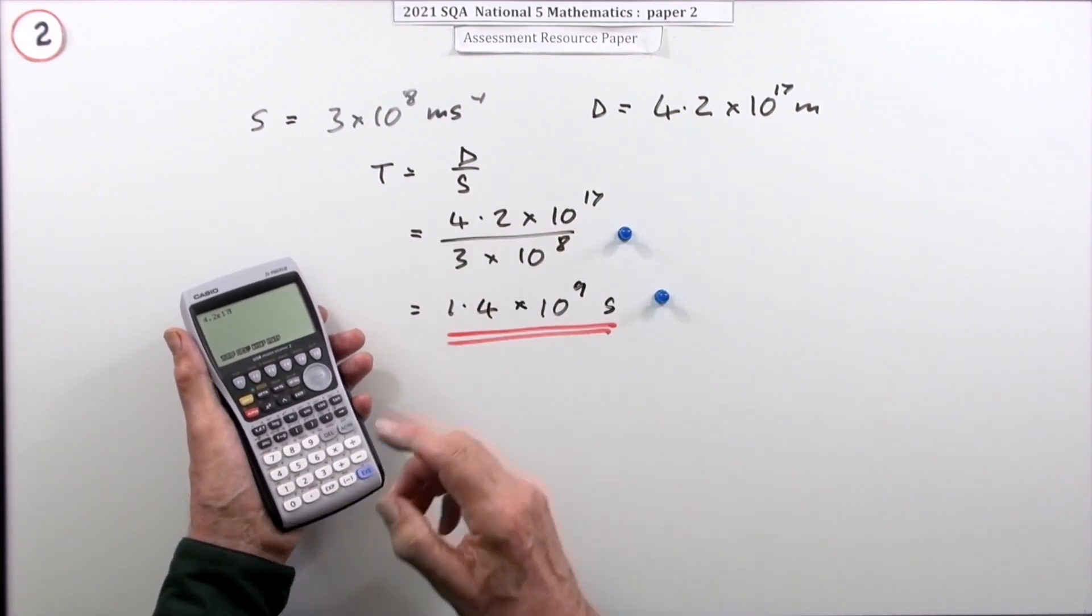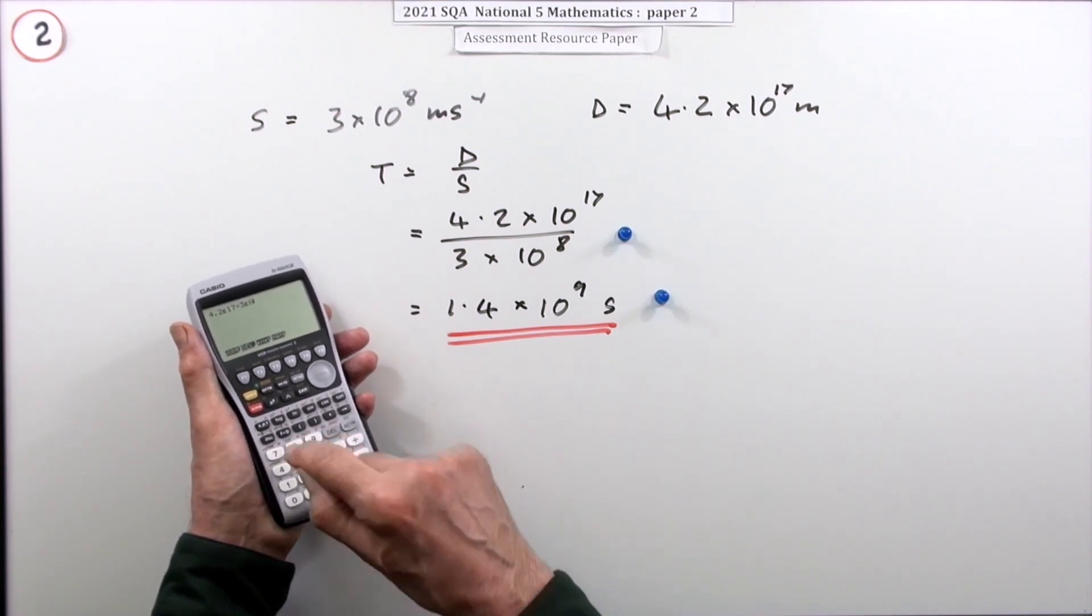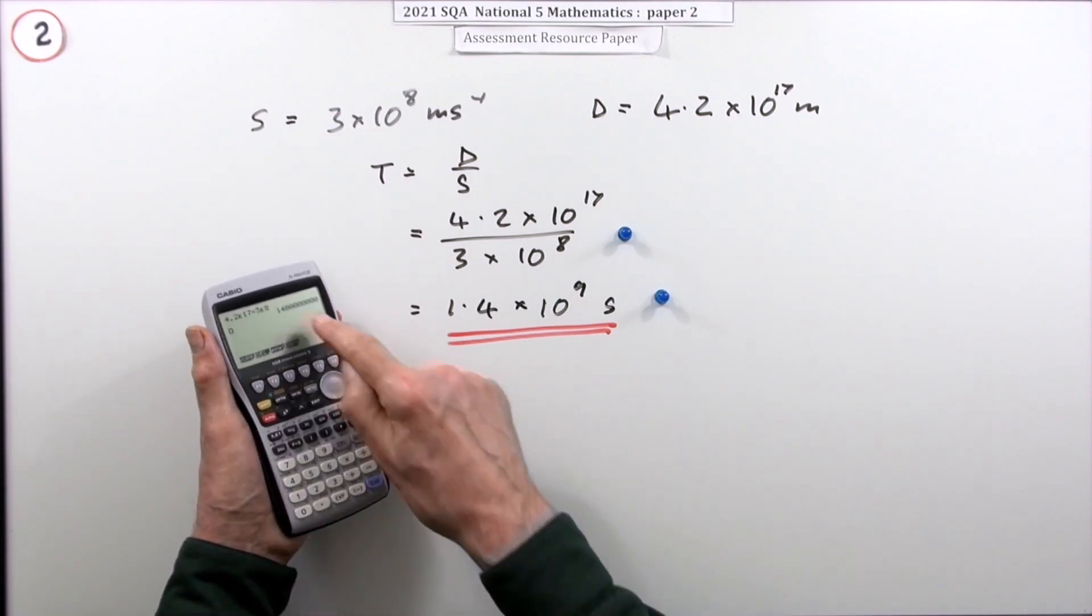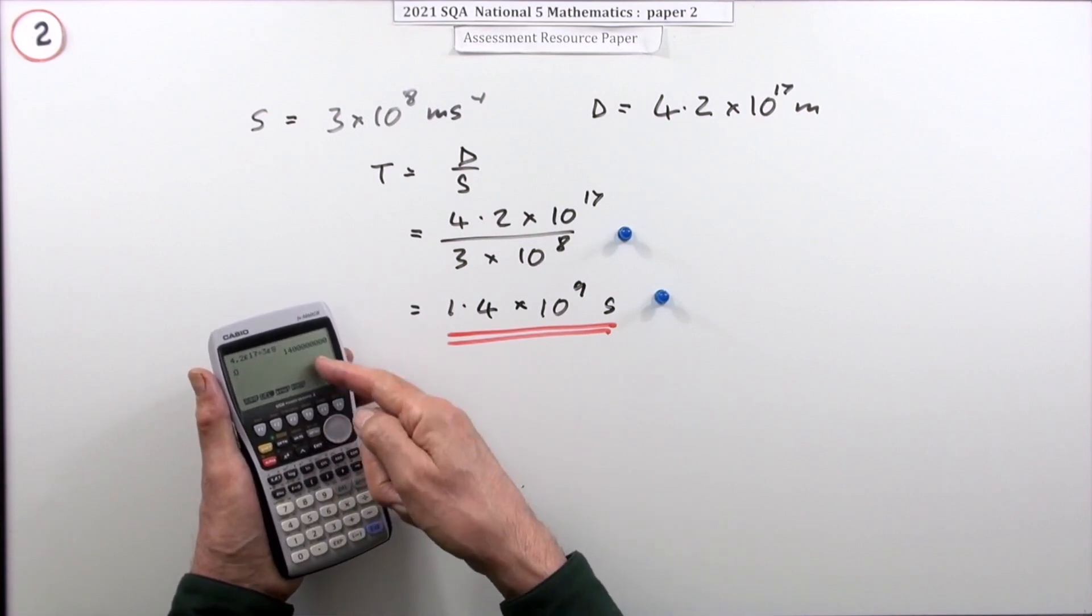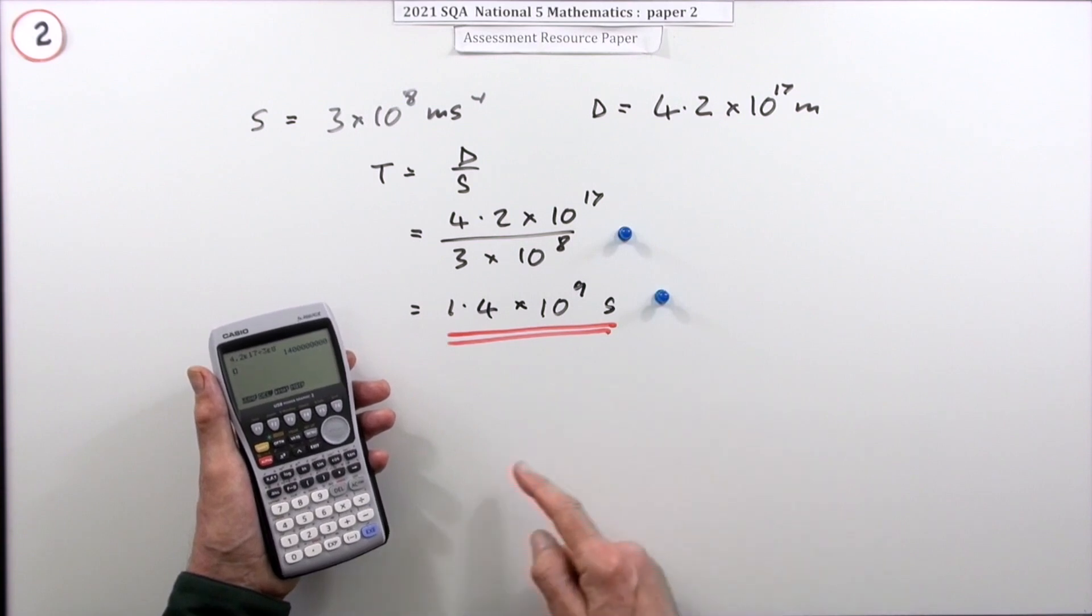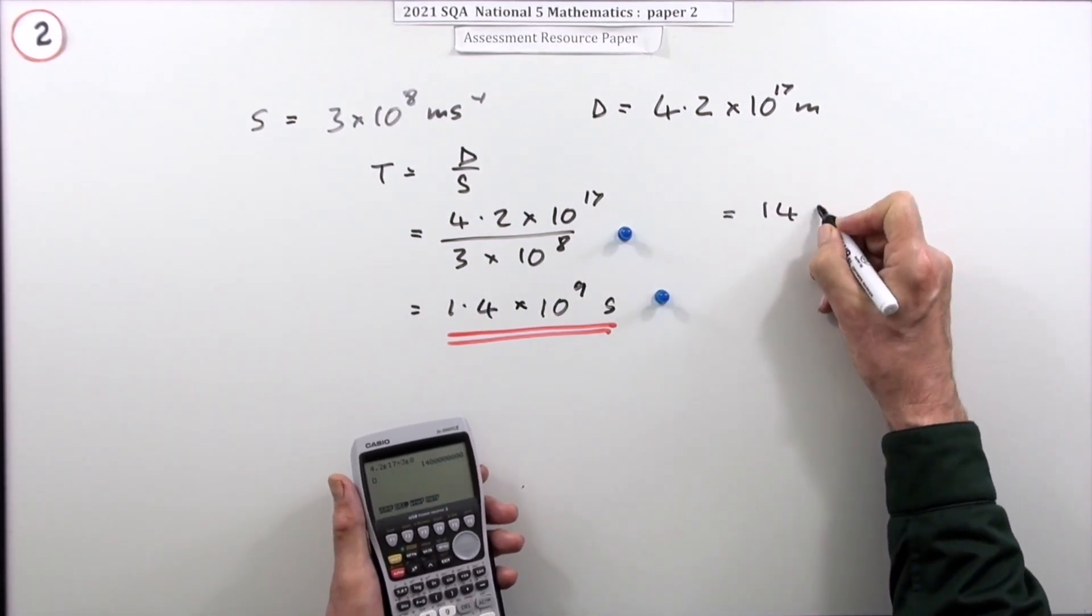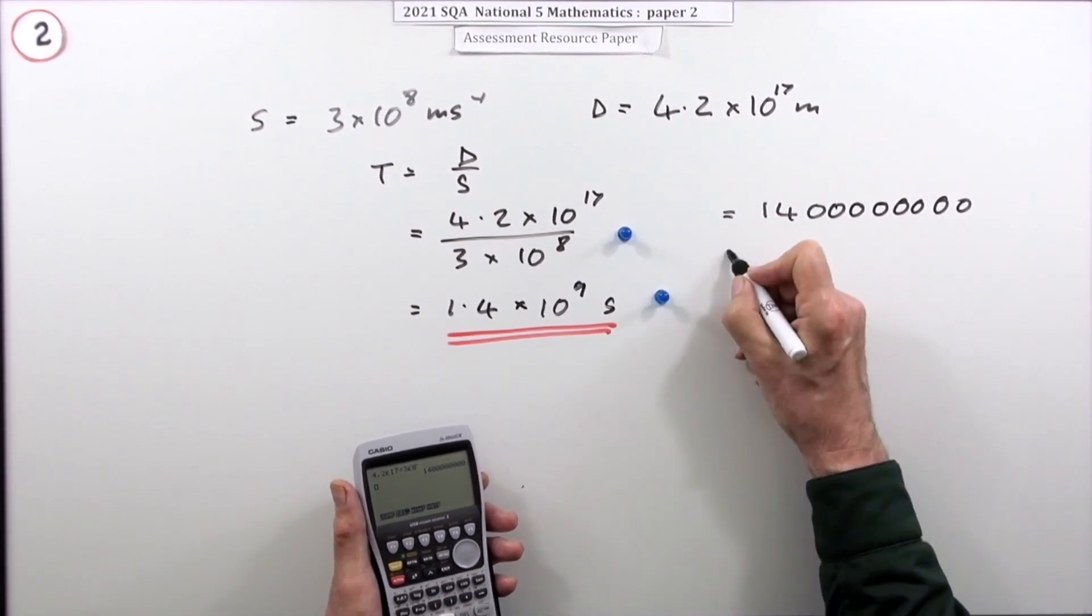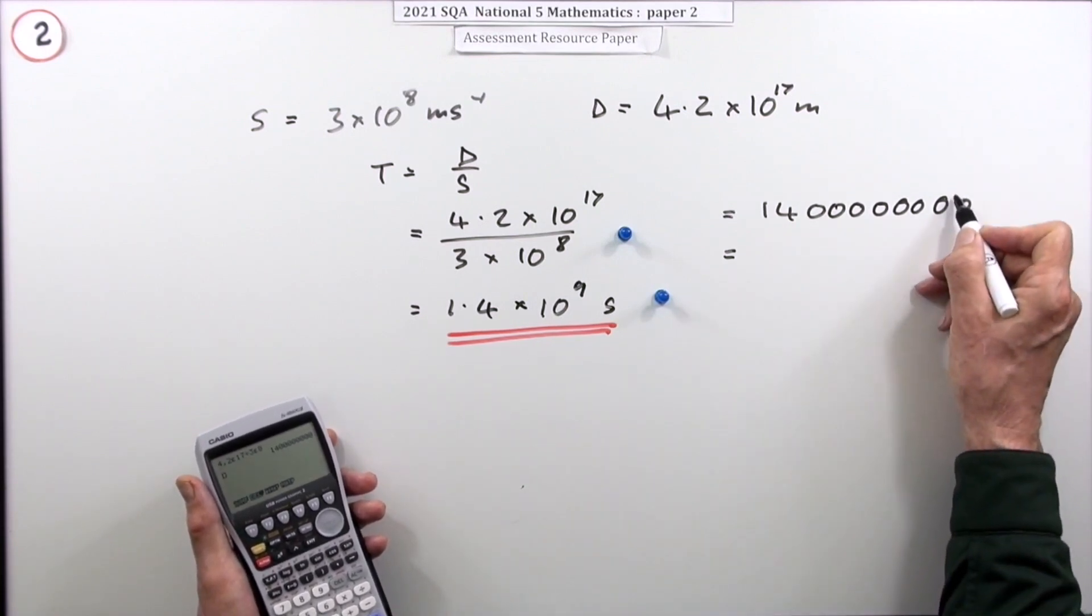If you were to use divide, there's still this business: do you trust that exp button? Can I enter that just as 4.2 exp 17 divided by 3 exp 8? See that's the tricky bit, will that come out? Look how it comes out. So there's the same answer, 1.4 with all of those zeros, there's eight zeros there.